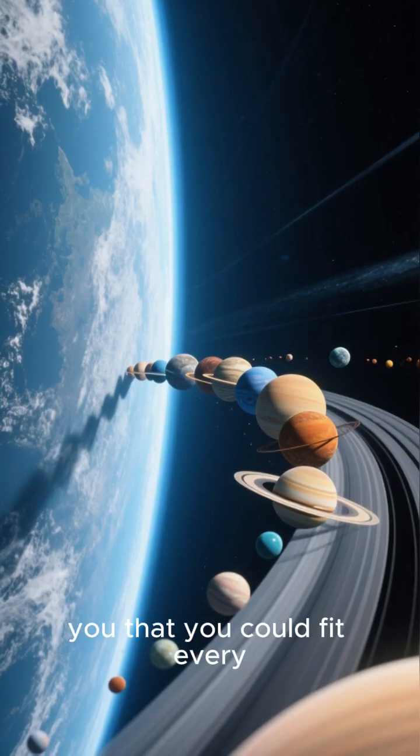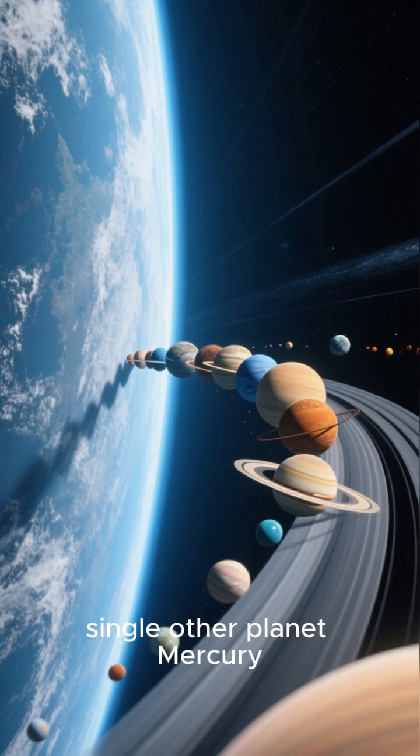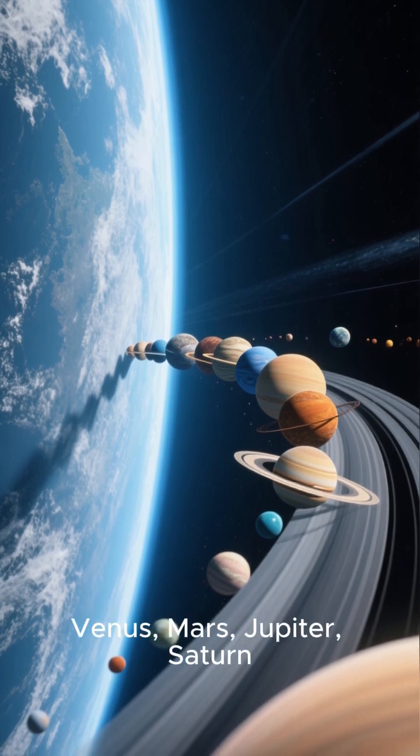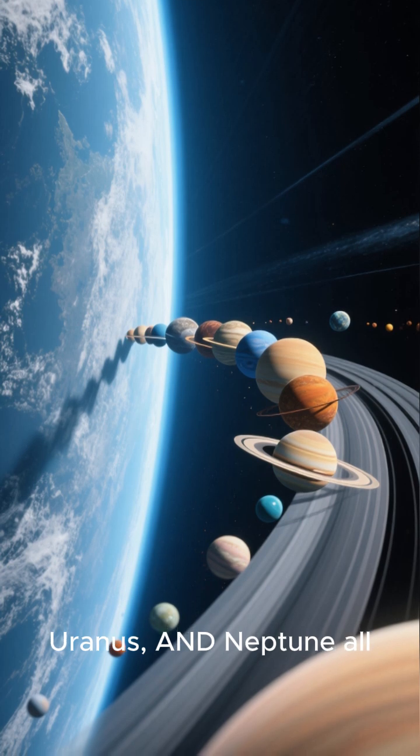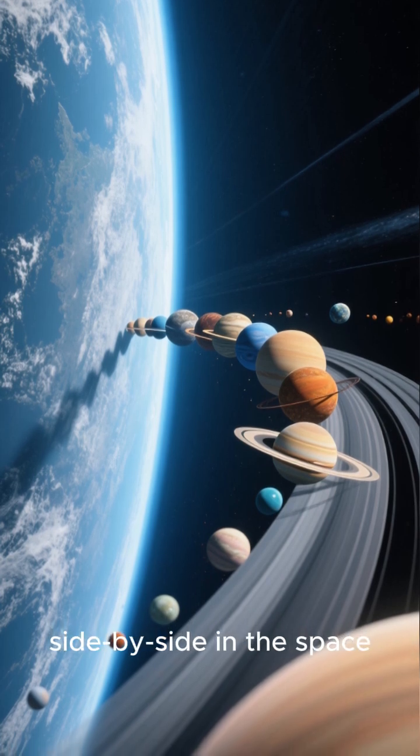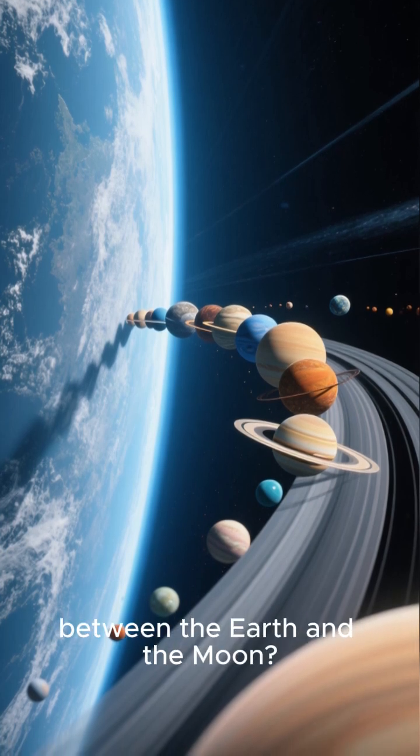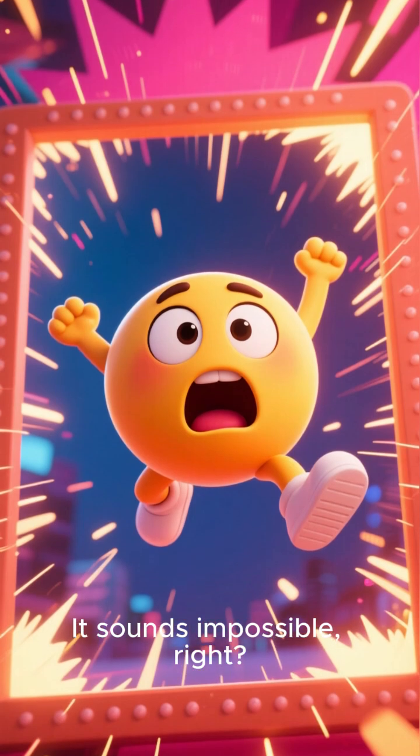What if I told you that you could fit every single other planet—Mercury, Venus, Mars, Jupiter, Saturn, Uranus, and Neptune—all side by side in the space between the Earth and the moon? It sounds impossible, right?